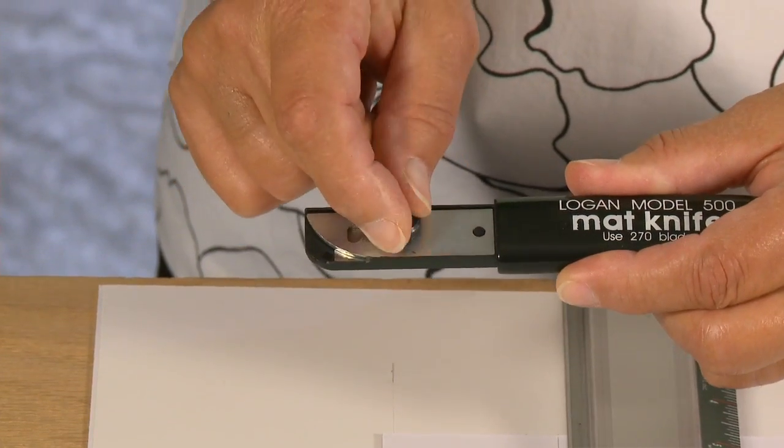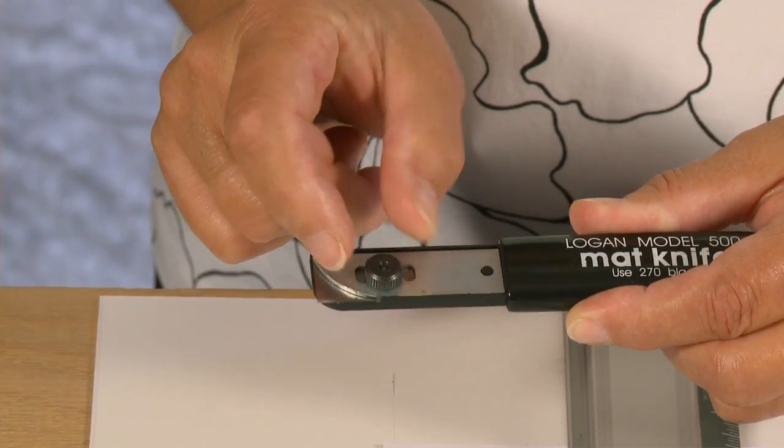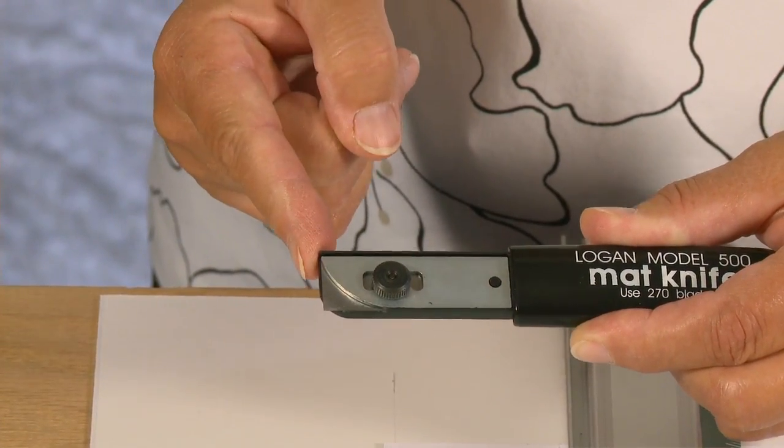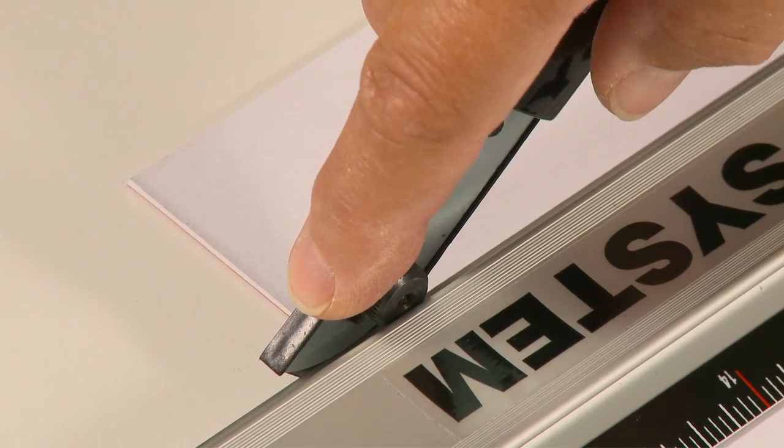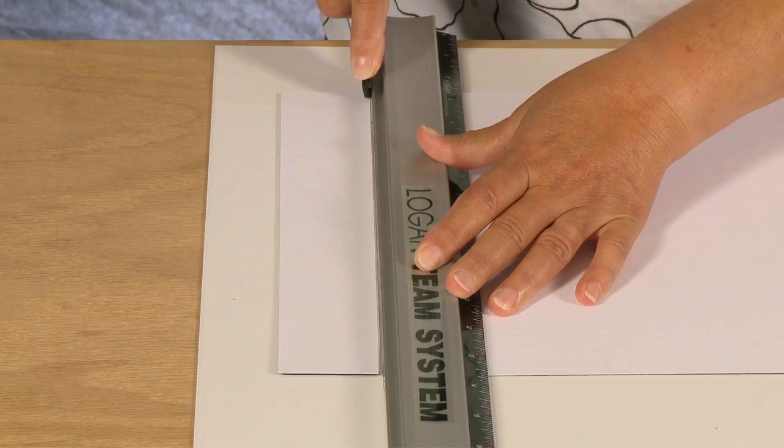Adjust the blade depth on the mat knife to the standard thickness mat board setting. Use the rounded edge of the blade cover to ride on top of the aluminum guide rail, holding the knife at a 45 degree angle, pull straight back to make your cut.